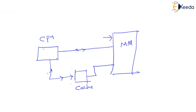When the cache doesn't have the data element, main memory will be accessed and the CPU will get the data. At that time, the corresponding data element will also be transferred to the cache memory. This is because the data element accessed currently may also be accessed in the near future — this is the primary implementation logic of the cache memory.